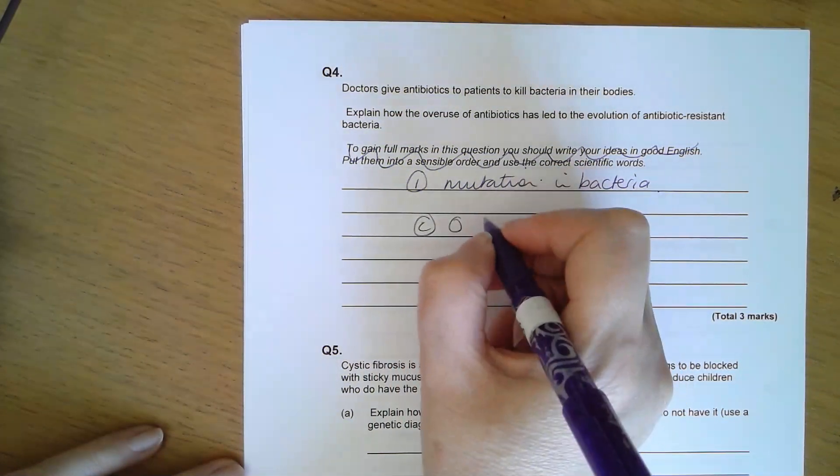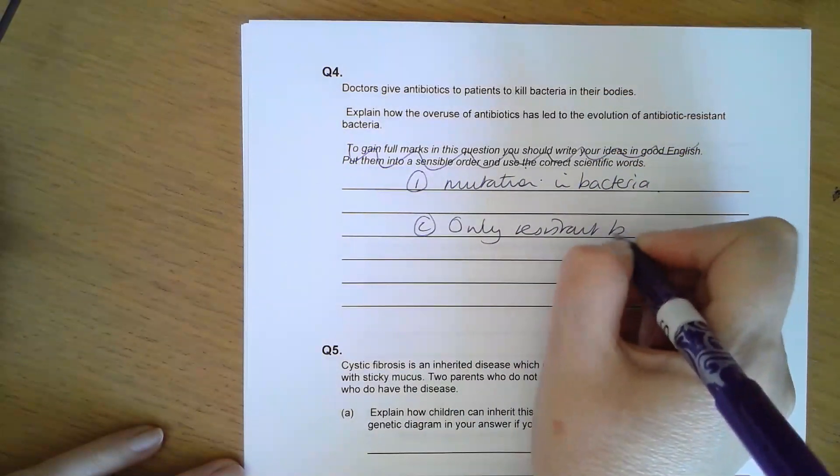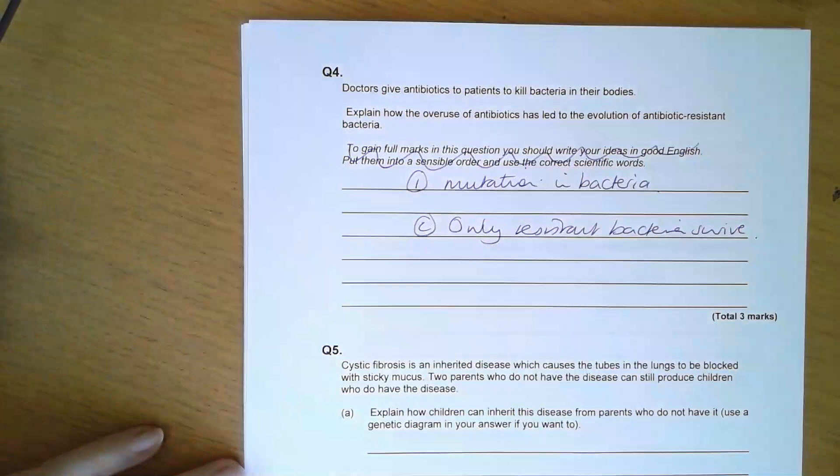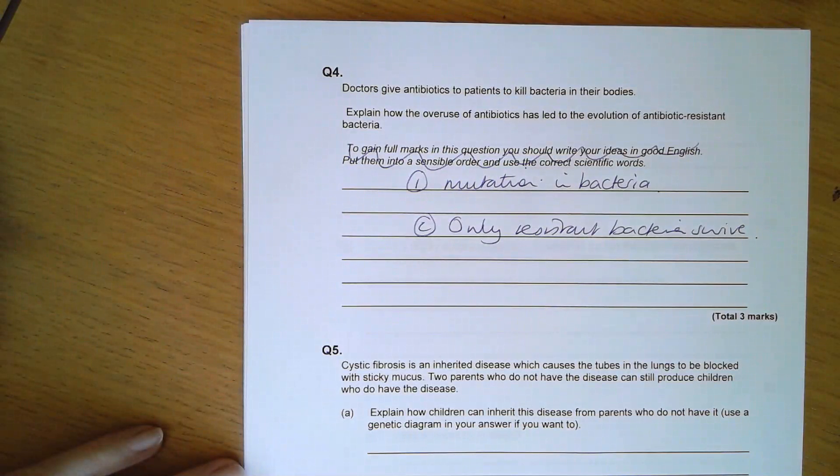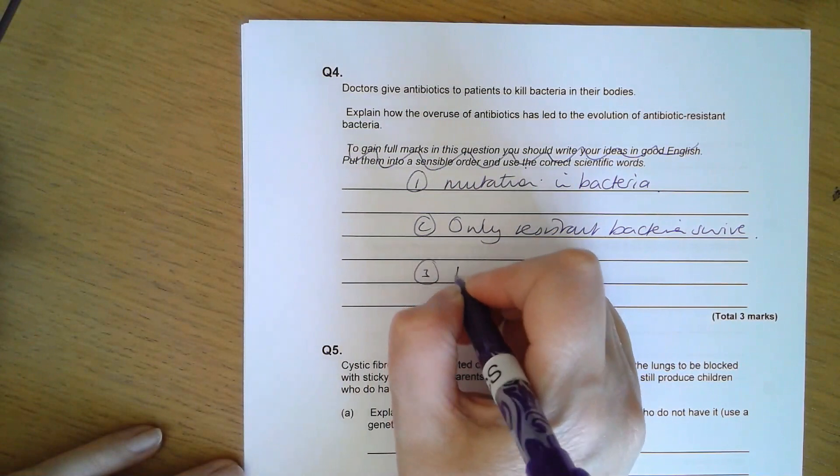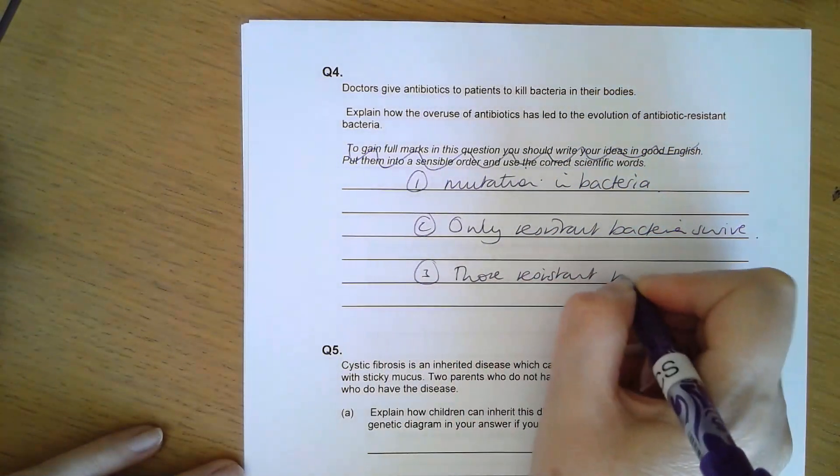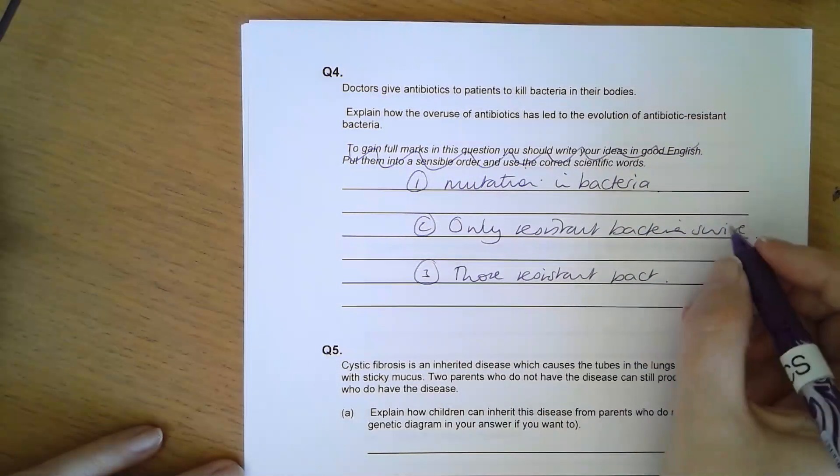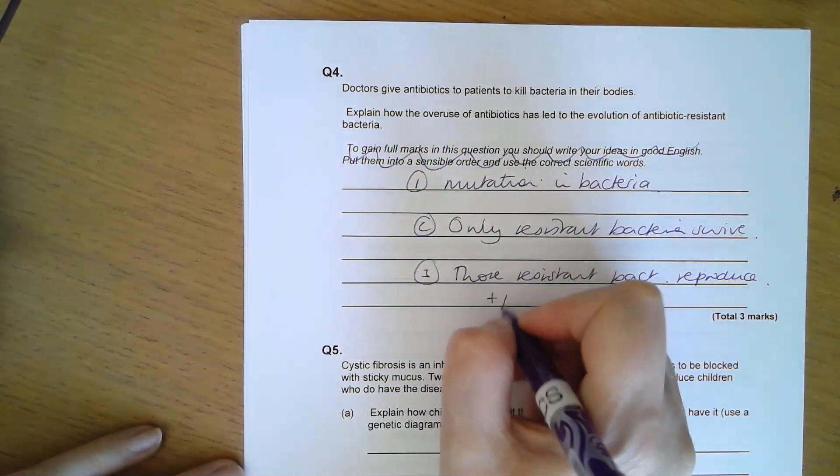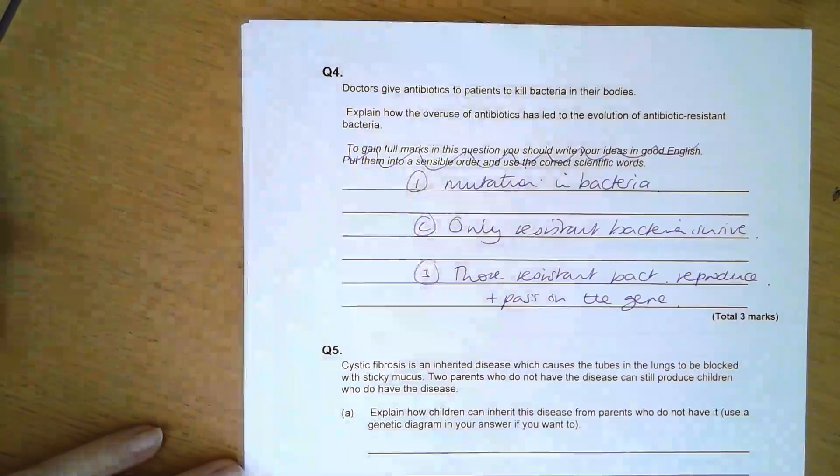Then only those resistant bacteria can survive, or those that are not resistant will die. Therefore those resistant bacteria are the ones that will reproduce and pass on the gene or mutation.